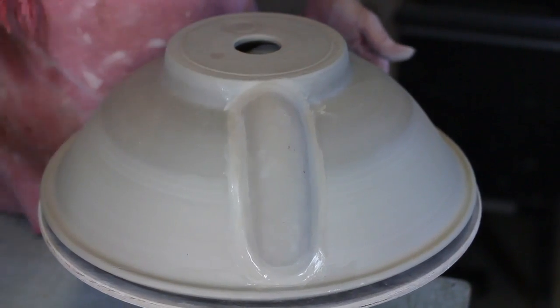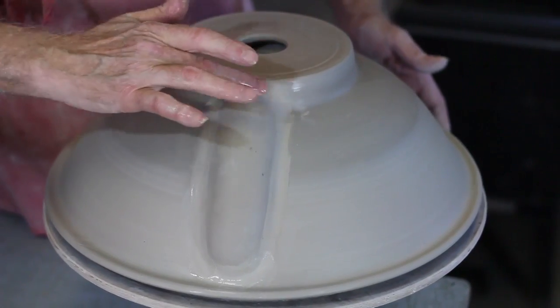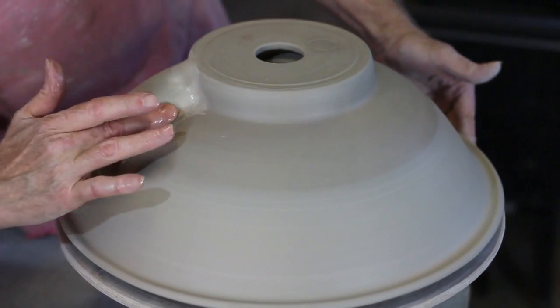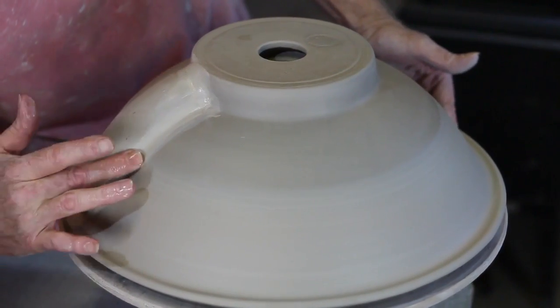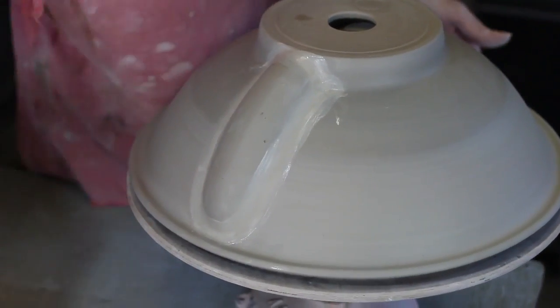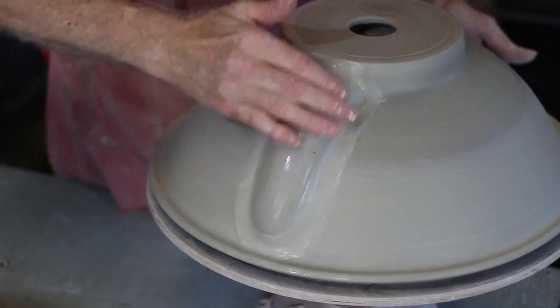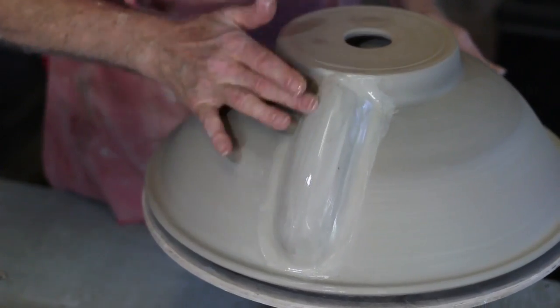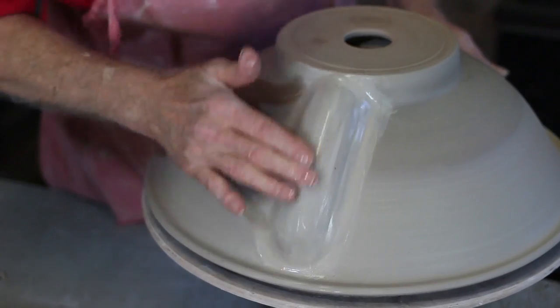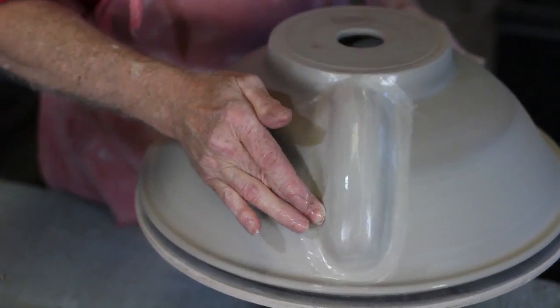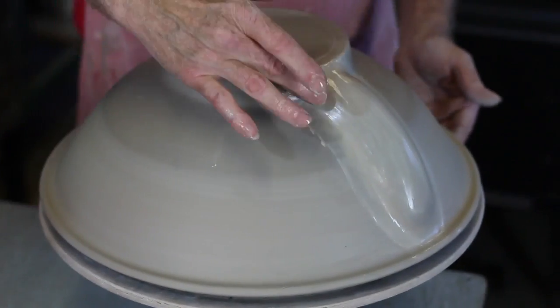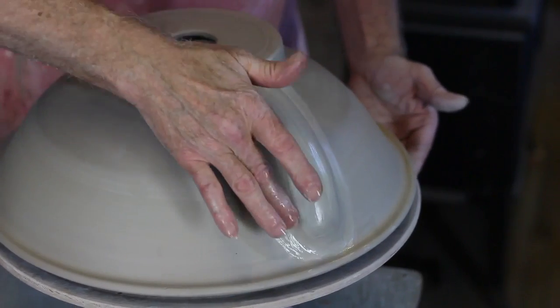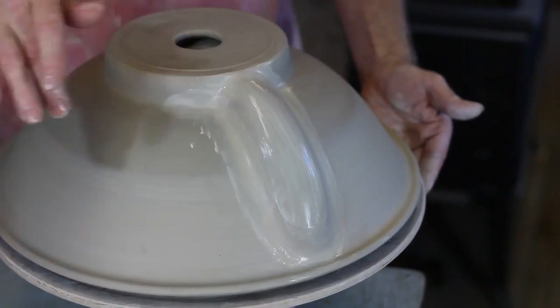I can wet my finger and then smooth that out and make the transition look finished. Usually I don't need to do this, but just to make it look organic, I usually just run some water over that so I have a nice smooth organic curve coming out of that. And that's about it.